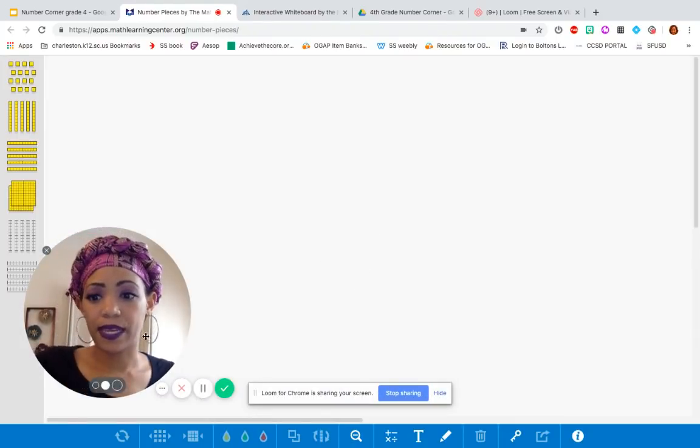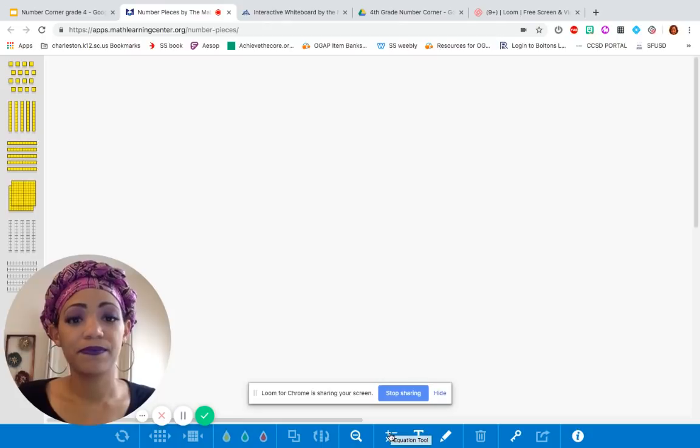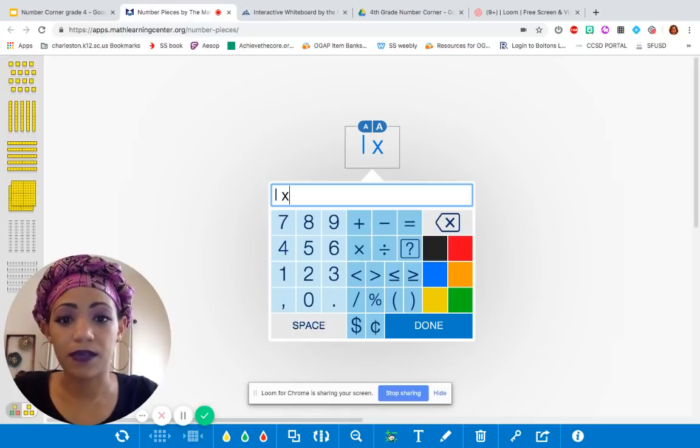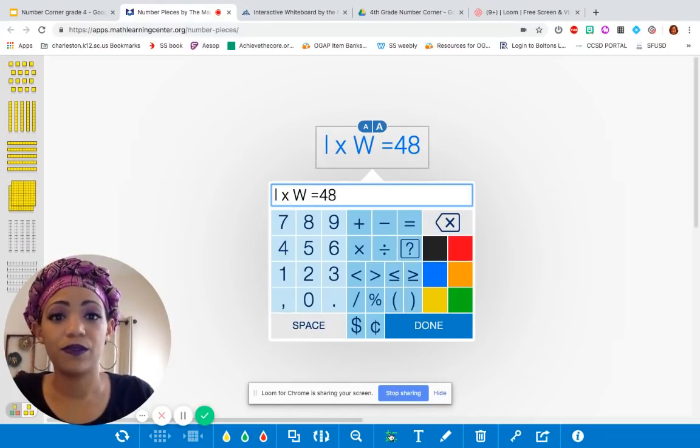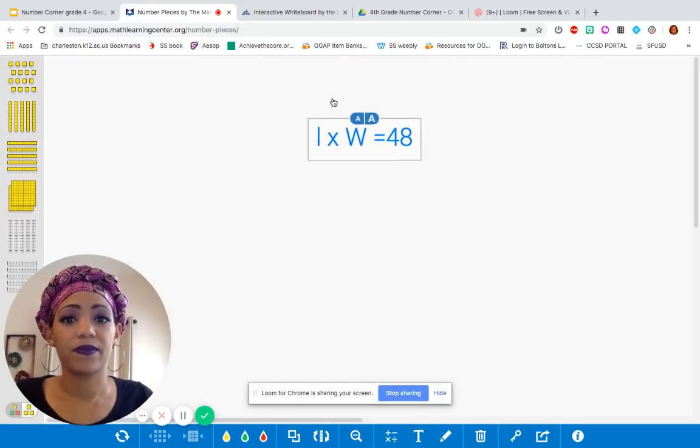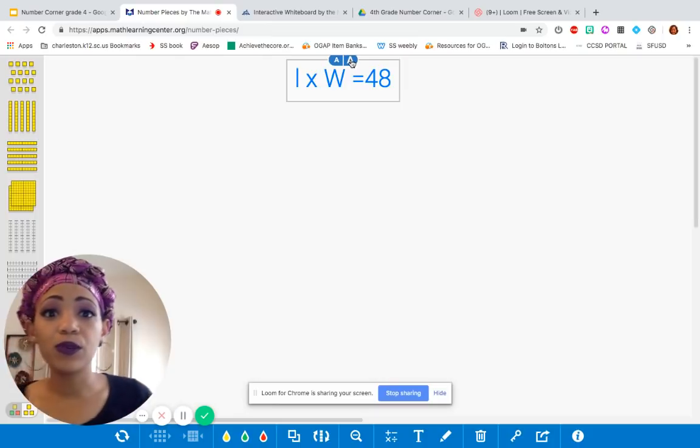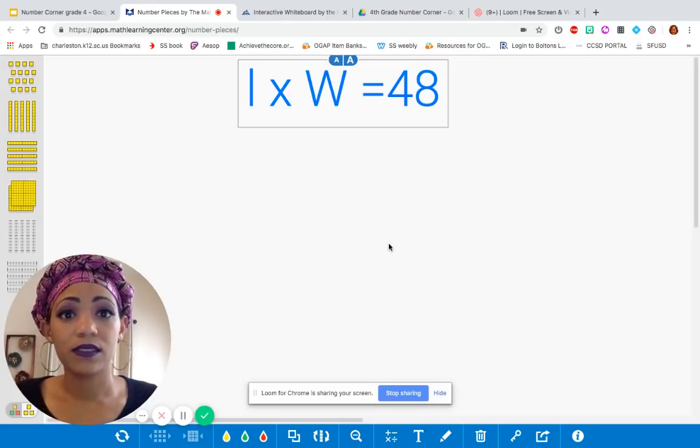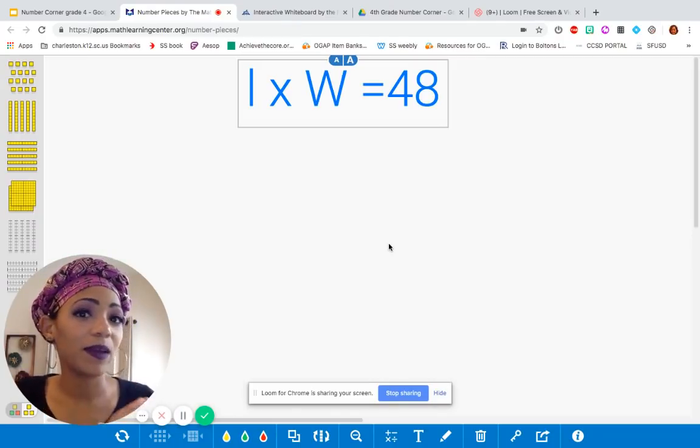I'm going to open up my whiteboard again here. And, so, talk with me about how you thought through this problem. First of all, let me just write it here at the top. Length times width equals 48. Okay, great. So, you thought about all the factors that multiply for 48, or that multiply together to give you 48. That's a good way to think about it.